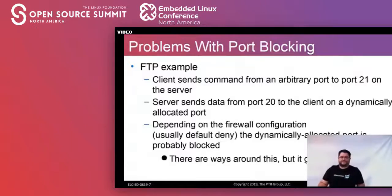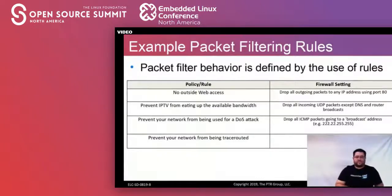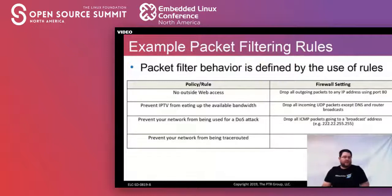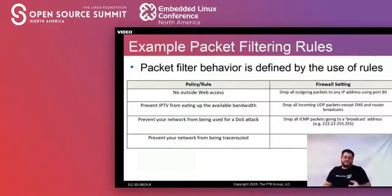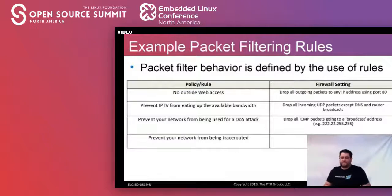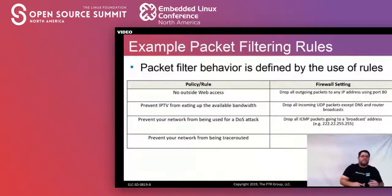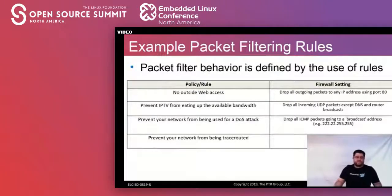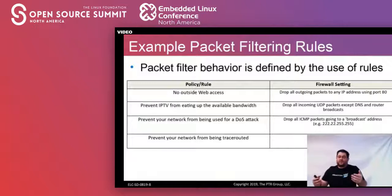This gets into a situation where you do actually need a stateful piece of the firewall. Usually this is built in as a module into the packet filtering system itself, so it keeps track of: oh, you wanted to talk to that FTP server back on this port — let me do the appropriate magic to allow that through without opening everything up in a weird way. So let's dig into packet filtering rules. It really comes down to a policy you want to implement. For example: no outside web access — on the firewall side, you would drop all outgoing packets to any IP address using port 80. That's pretty straightforward, and you can build these rules into more and more complicated rule sets.